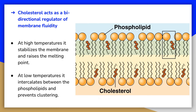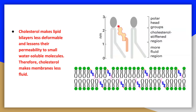Cholesterol acts as an antifreeze in the cell membrane and is more abundant in animal cells that live in cold climates. Cholesterol interacts with phospholipids by orienting its polar hydroxyl head group close to the polar lipid head group. The rigid rings of cholesterol interact with and partly immobilize the fatty acid chains closest to the polar phospholipid head group. By decreasing the mobility of a few methylene groups in the fatty acid tails, cholesterol makes lipid bilayers less deformable and lessens their permeability to small water-soluble molecules.